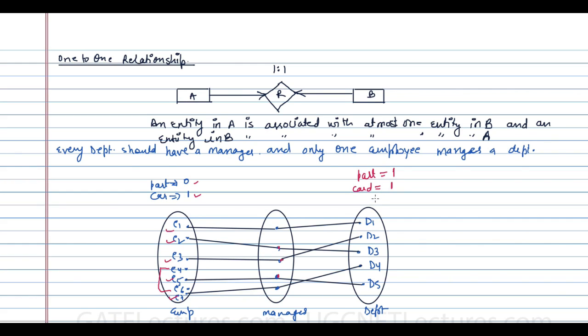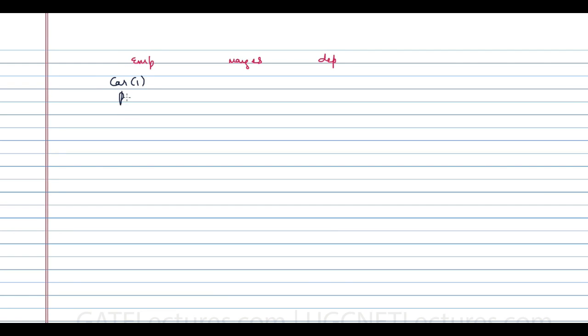We can also represent this relationship in min-max form. The relationship involves employee, the 'manages' relationship, and department. For employee: cardinality is one and participation is zero. For department: cardinality is one and participation is one. The degree of this relationship is two.